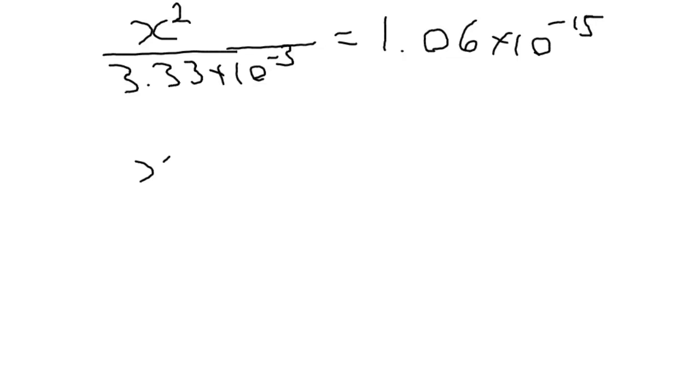What we end up with then is that the products over reactants. So products are both x. So we can make that x squared. Reactant is 3.33 times 10 to the minus 3. Again we're ignoring that minus x because 1 over Kf double primed is small. That's going to be equal to 1.06 times 10 to the minus 15. Solve for x and you get a value of x which is 1.9 times 10 to the minus 9.